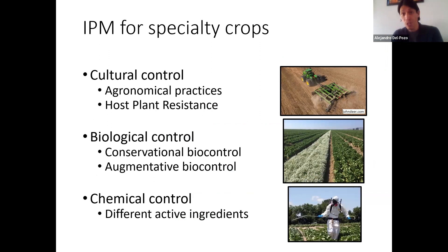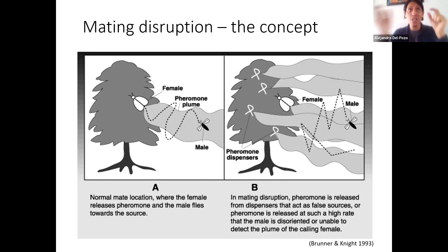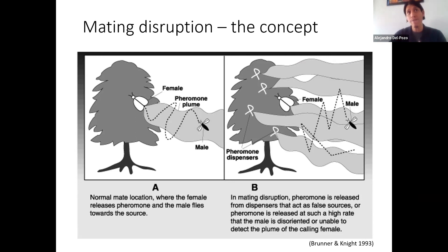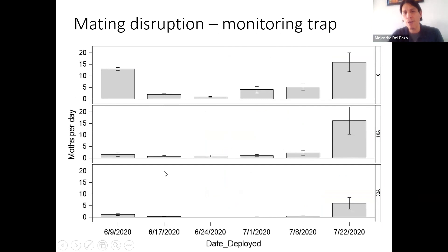Do we have an IPM program for specialty crops — the crops you deal with in organics? Of course we do: cultural control, biological control, chemical control. Cultural control includes variety selection, irrigation, fertilization, mowing, pruning, and sanitation. We're also doing pheromone mating disruption — using sex pheromone to confuse males. Something I started in Salinas and am still doing in Virginia. We were able to show that pheromone dispensers can reduce the number of males flying in treated areas — at 16 dispensers per acre or 32 dispensers per acre for diamondback moth in cole crops.